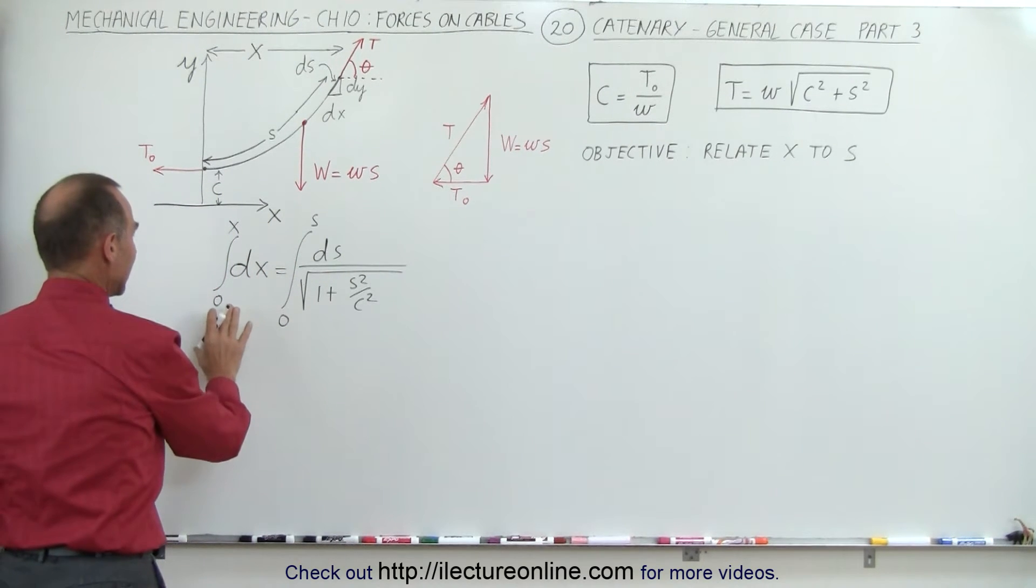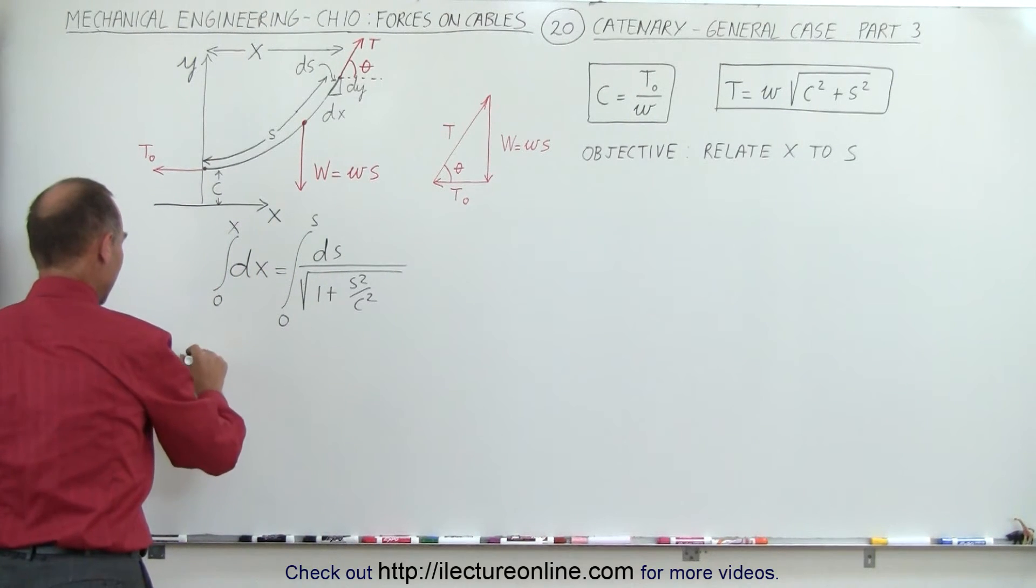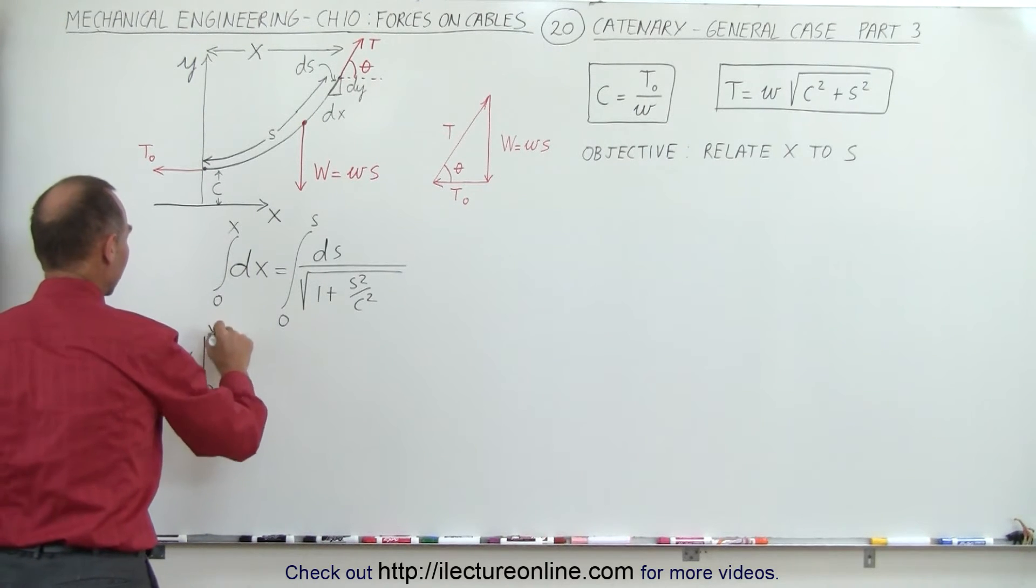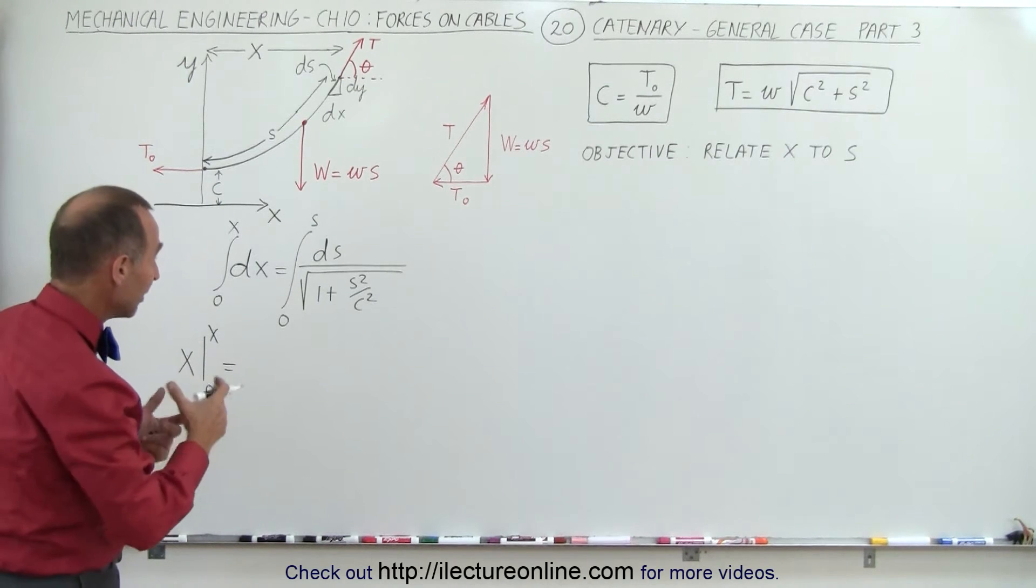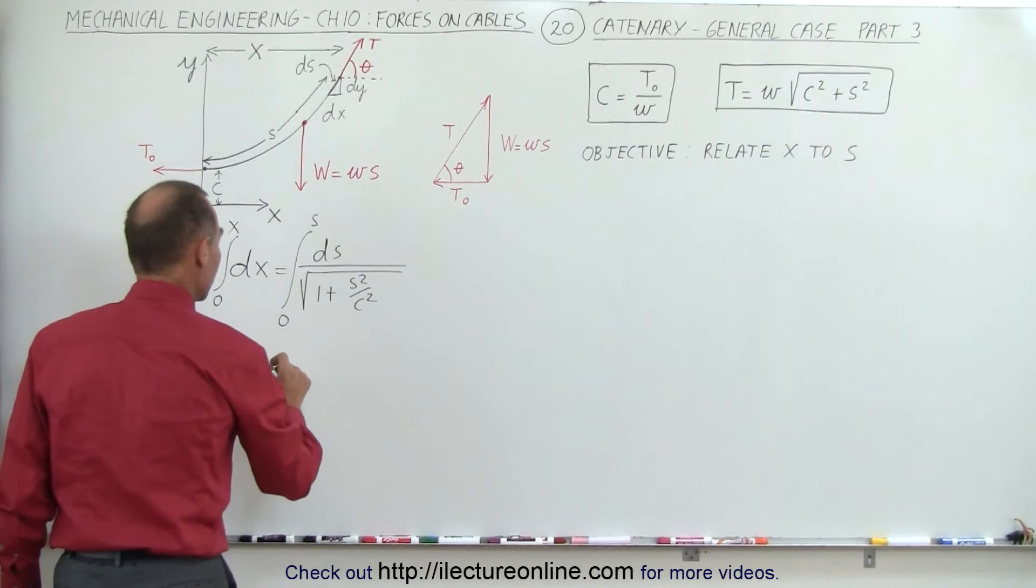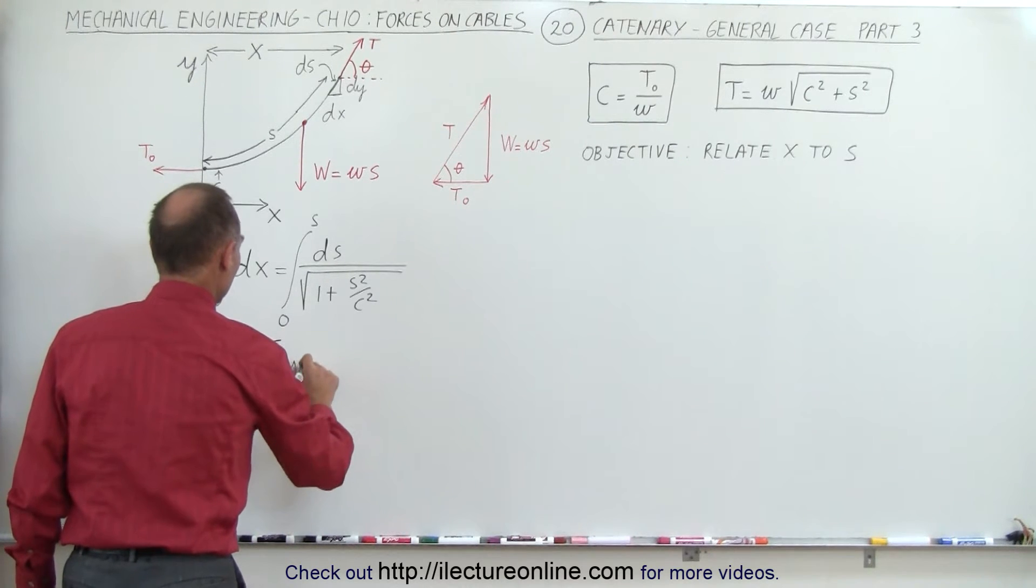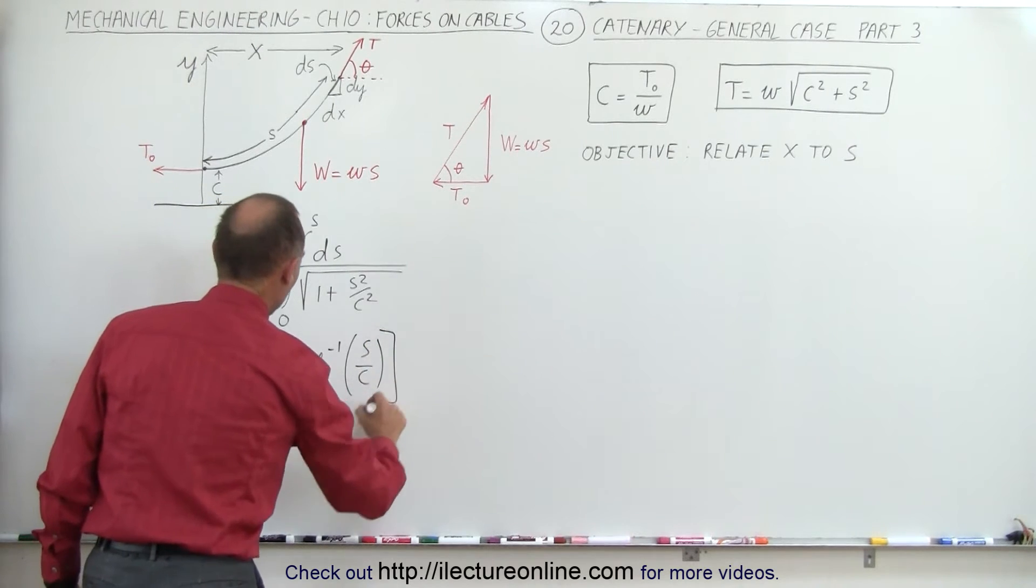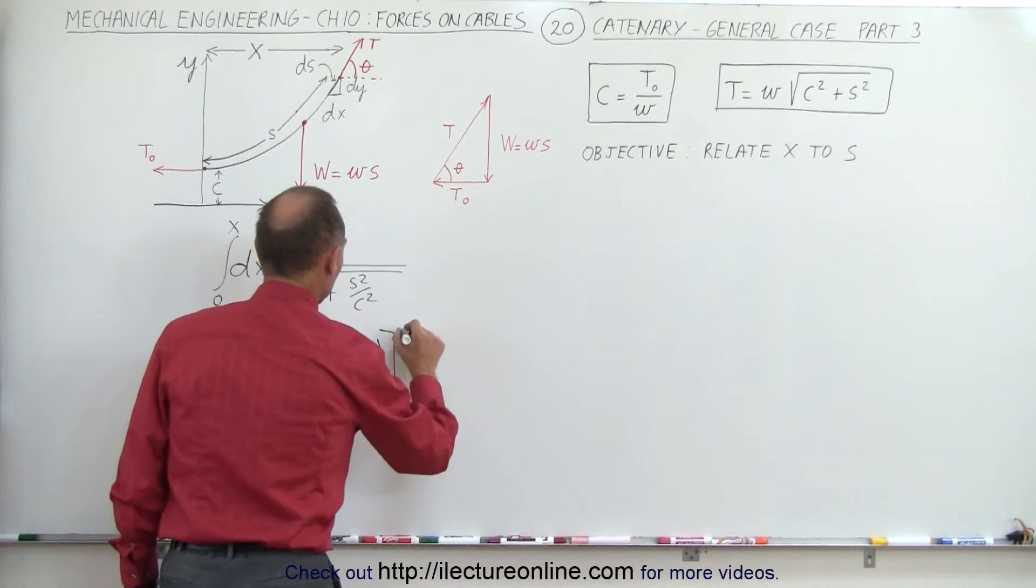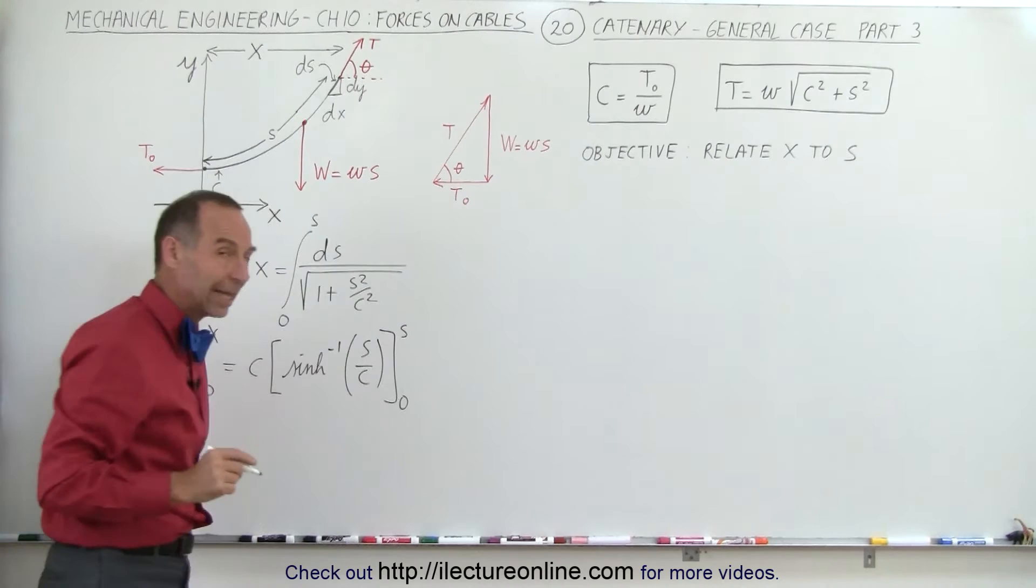Taking the integral of the left side we get x evaluated from 0 to x. When we take the integral of the right side, that is of course the inverse hyperbolic sine, which means we get c times the inverse hyperbolic sine of s over c evaluated from 0 to s along the length of the cable.